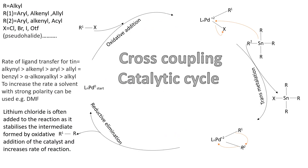Now we have the mechanism for the cross coupling catalytic cycle. I've put a key on the top left so you can see what I'm referring to when I say R, R1, R2, or X. The first section of the catalytic cycle is the oxidative addition of the organohalide, going from the palladium(0) to the palladium(II) complex — from 14 to 16 electrons. It has been suggested that an anionic ligand such as OAc can speed up the reaction by making the palladium more nucleophilic. Then the organotin undergoes transmetalation, whereby the halide ion on the palladium gets replaced by the R group of the organotin. Finally, reductive elimination produces the coupled product and regenerates the catalyst so the cycle can begin again.